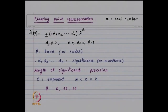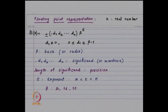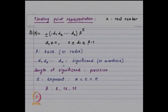We assume d1 is not equal to 0. The digits d_i lie between 0 and beta minus 1. This beta is known as the base or radix; it takes the value 2 for binary representation, 10 for decimal, or 16 for hexadecimal. The number of digits n depends on your computer.